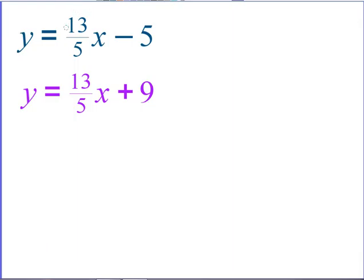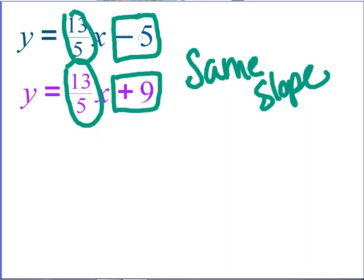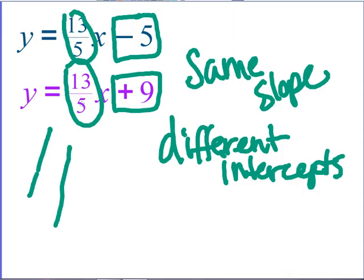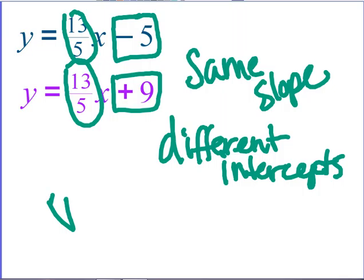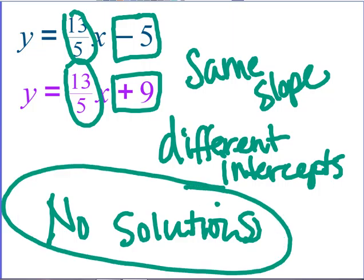How about this next example? What do you notice about their slopes? They're both thirteen over five, so we can say they have the same slope. But what about their intercepts? One crosses the y-axis at negative five, and the other crosses the y-axis at positive nine, so they have different intercepts. Because of that, what kind of system is this going to be? They're starting in different places, but they're going in the same direction — that's going to be a no-solution system. Those lines are parallel.